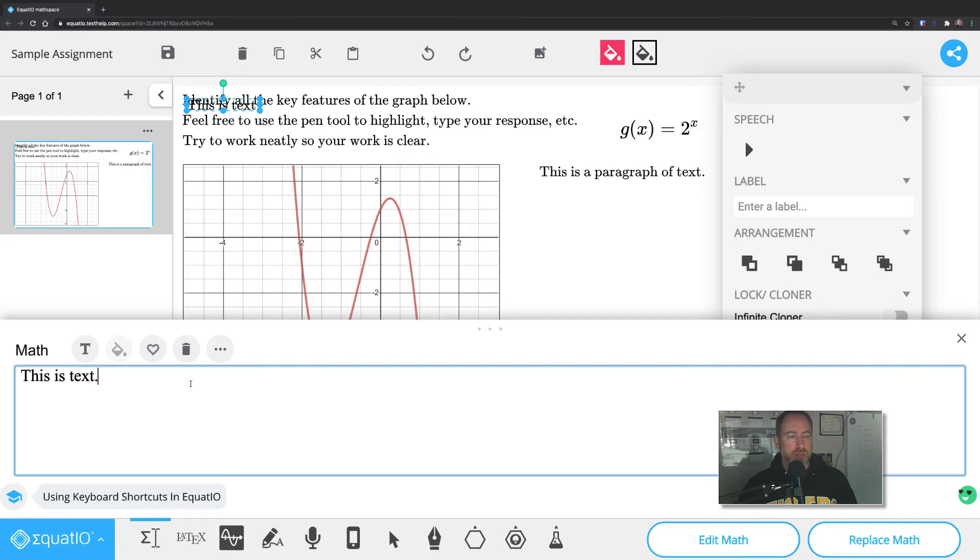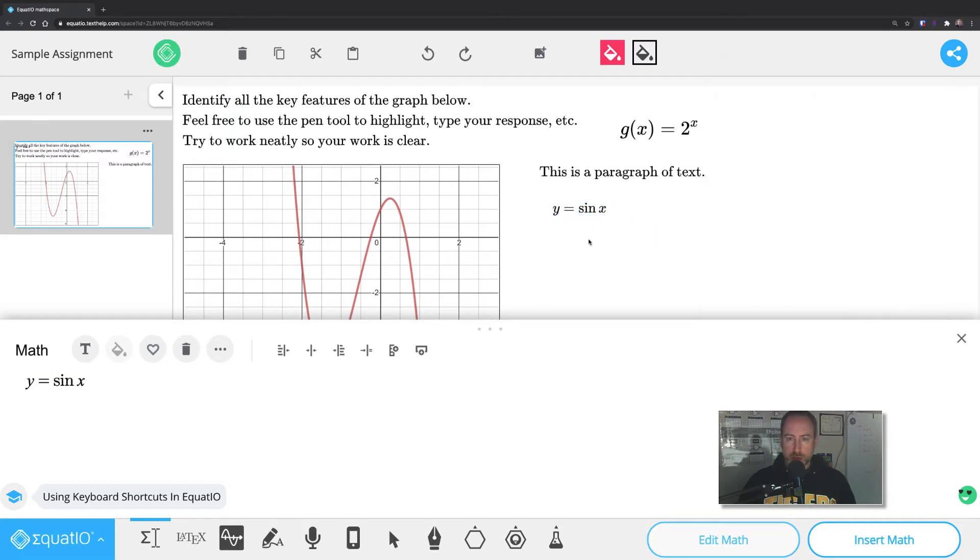There's a shortcut for inserting the math. I forget what it is. I'm on a Mac, so let's just try this out. Y equals sine X. And I'm going to hit, I don't know. Command, Alt, or Option, Command, Enter. Nope, that didn't do it. Control, Option, Command, Enter. Oh, that did it. Control, Alt, Command, Enter. Or Control, Option, Command, Enter. So try that on Windows, whatever that might be. It was quite the keyboard. Anyway.